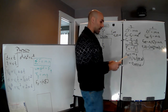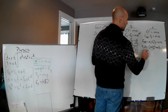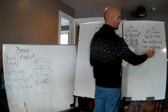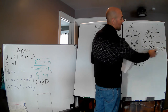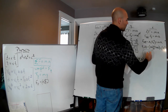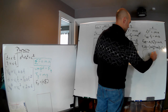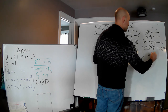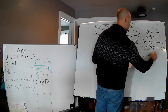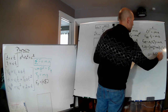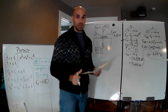Doing all of this math out — multiplying mu times Fn, subtracting from the applied force, then dividing by the mass — we get an acceleration of 1.54 meters per second squared.